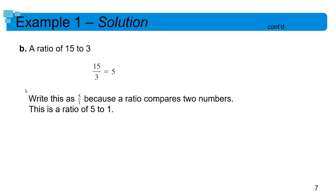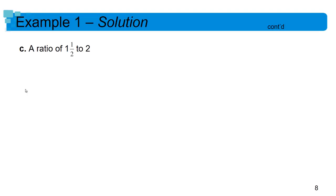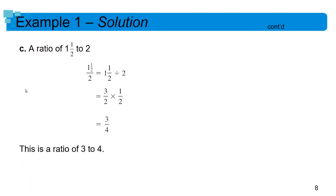The first number represents something and the second number represents something else — remember, with TV screens, the first number is the width and the second is the height. For a ratio like one and a half to two, you'd never leave it that way. Convert one and a half to three halves, then divide by two — which means multiply by one half — and you get three fourths. So the ratio is really three to four. Ratios should always be whole number to whole number in their lowest reduced form.